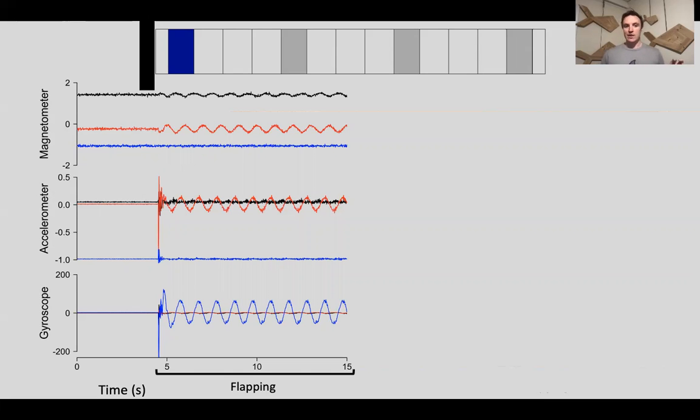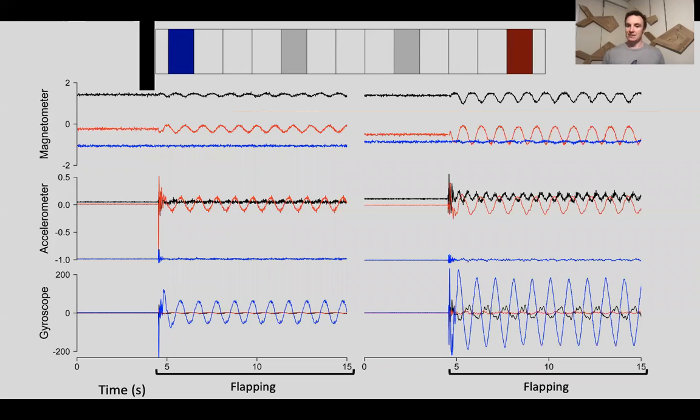We can compare the first sensor, the leading edge sensor, to the very last sensor, the dark red sensor here. Right off the bat, you'll see there's differences very clearly in the gyroscope data, but also in the magnetometer and accelerometer as well.